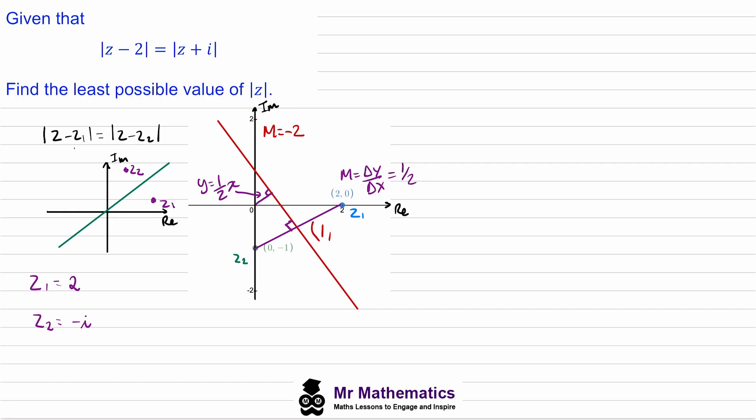and the y value will be halfway from 0 to negative 1, so this will be negative 1/2. So now we have the gradient and a point on the line. We can use the equation of a line. If we say this is L1, then the equation of L1